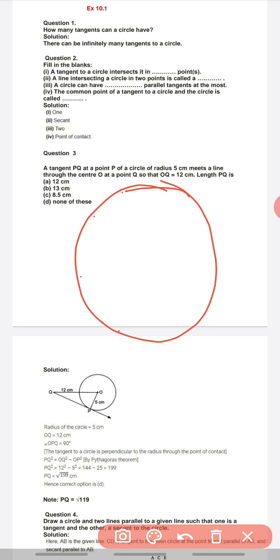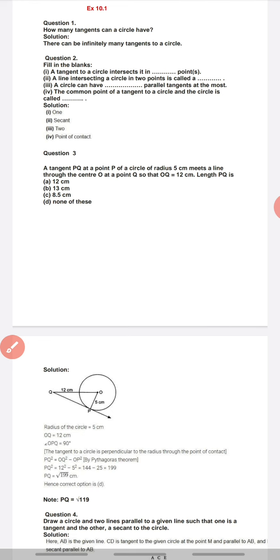So on these infinite number of points we can draw infinite number of tangents. The answer to question number first is that there can be infinitely many tangents to a circle. Agar aapke paas ek circle ho, ismein hum infinite number of tangents draw kar sakte hain, because circle is made up of locus of points, infinite number of points, so on every point we can draw a tangent.